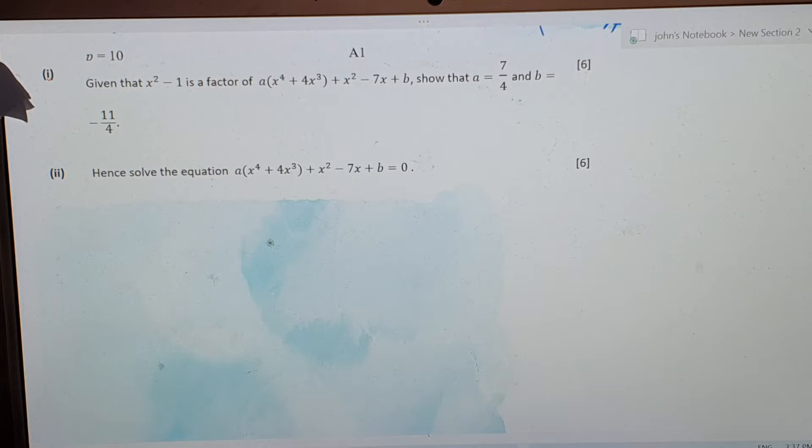Okay, this is on remainder factor theorem. You are given that x square minus 1 is a factor of this. Factor means when I take this whole expression, then I divide it by this whole thing. The remainder is 0. So that's what it means by factor.